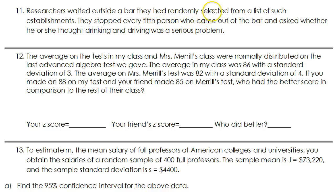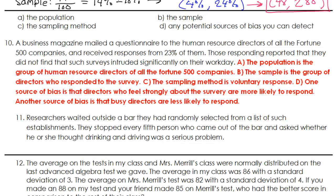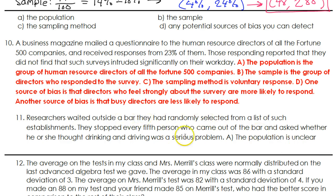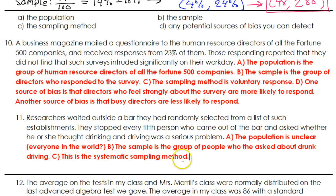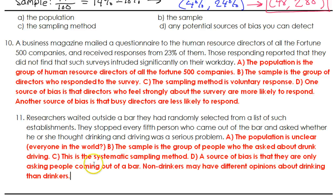Researchers waited outside a bar they had randomly selected from a list of such establishments. They stopped every fifth person who came out of the bar and asked whether he or she thought drinking and driving was a serious problem. The population is unclear — perhaps it is all people in the world, city, or state; we really can't know from the wording. The sample is the group of people they asked. This is the systematic sampling method because they asked every fifth person. A source of bias is that they are only asking people coming out of a bar — non-drinkers may have different opinions about drinking than drinkers.